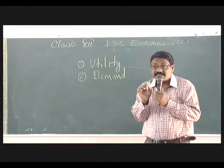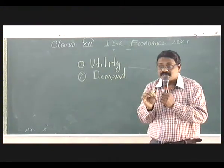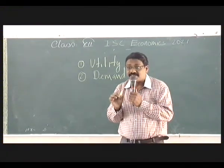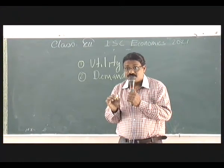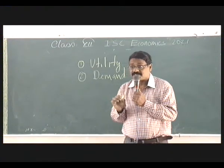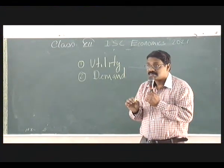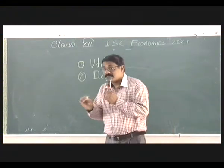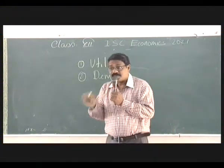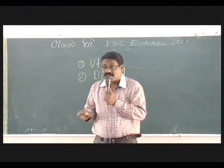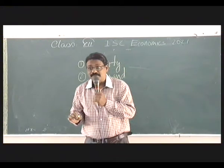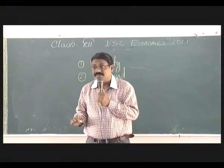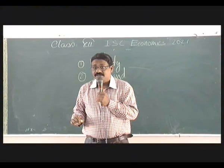What are those attributes? The first attribute is that it should be scarce. If it is in abundance, you don't have to pay for it. For example, oxygen — have you ever seen people say 'I pay this much daily for oxygen'? You don't have to pay for it because it is not scarce.